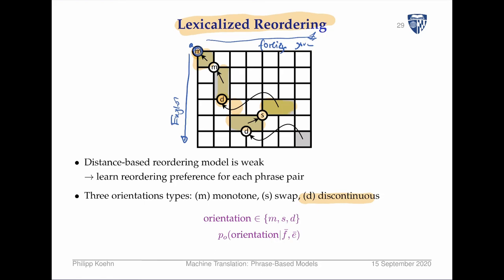We've really just completed a swap of these two phrase pairs. Therefore we treat it slightly differently — we call it a swap. And then the last one is again discontinuous, although there are some versions where that last step is called monotone.